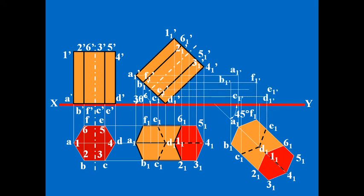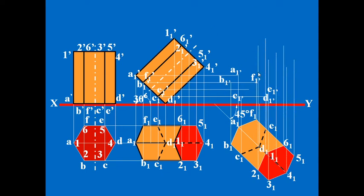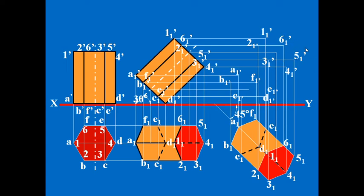Draw the vertical and horizontal projectors and represent the corners of the base, ABCDEF, and then the corners of the top face, 1, 2, 3, 4, 5, 6.